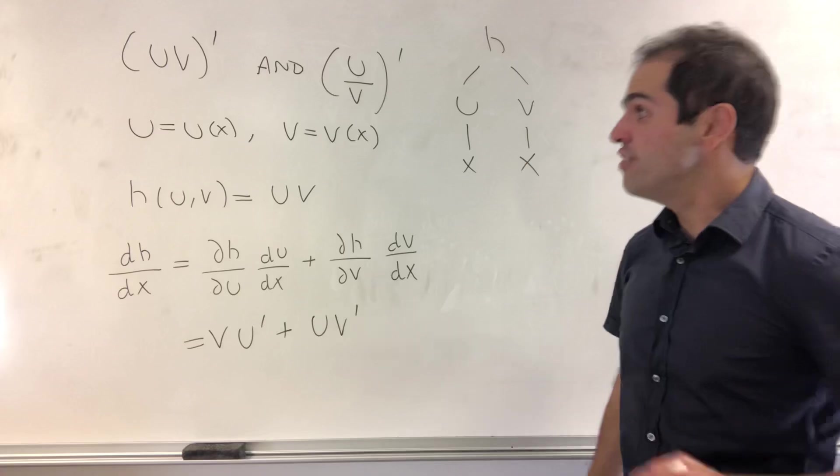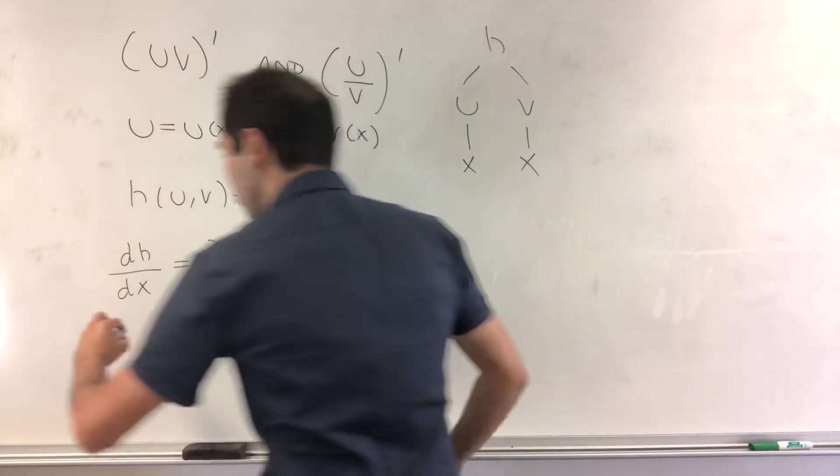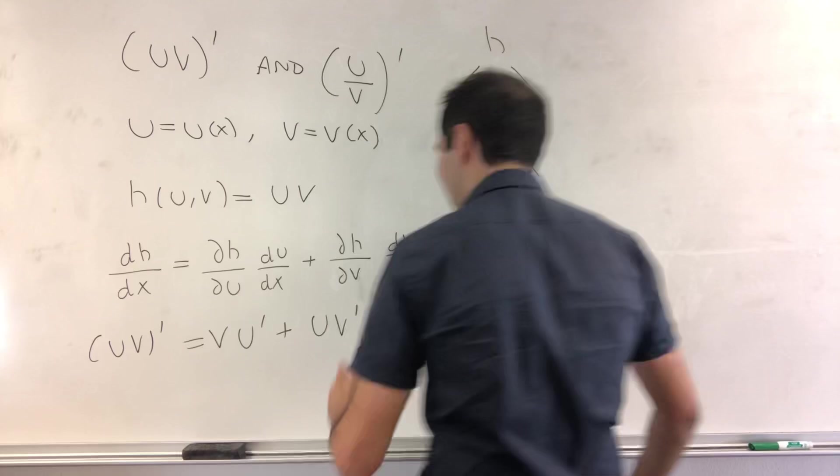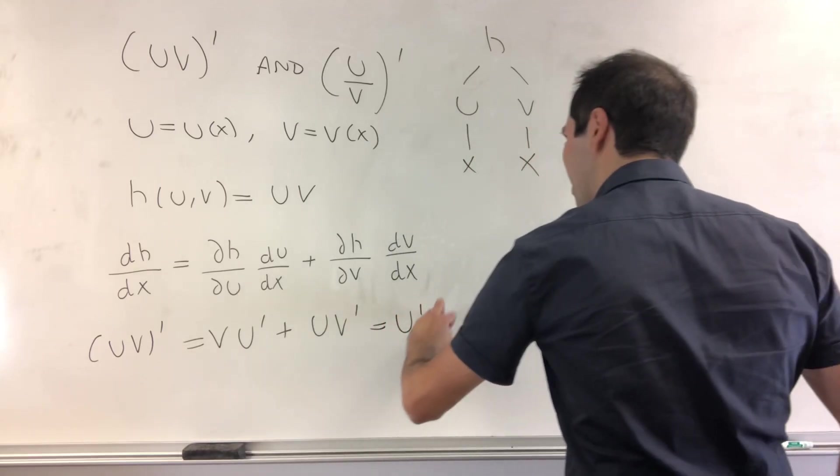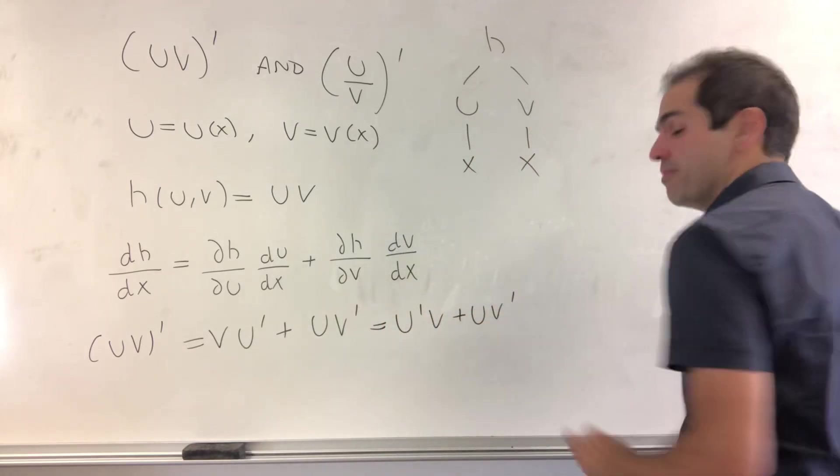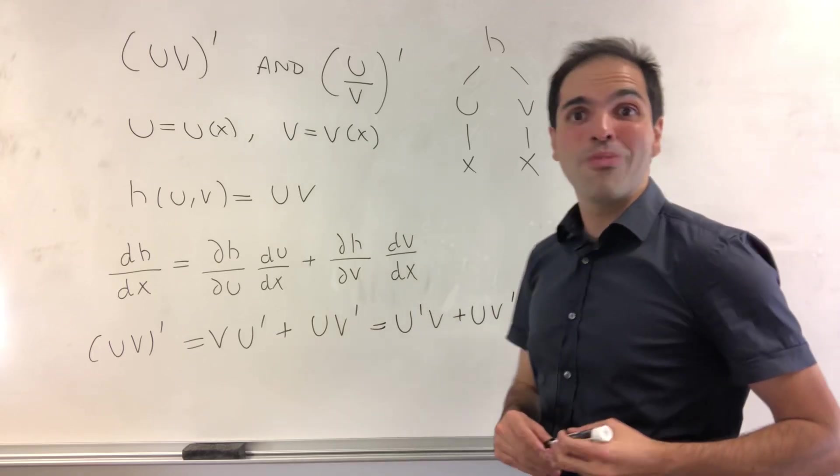But what have we shown? We've shown that the derivative of uv with respect to x is just u prime v plus uv prime, which is precisely the product rule.